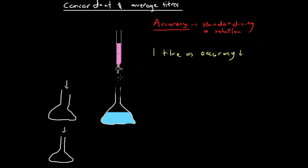Each time we do a titration, we obtain a different titer volume, or maybe the same titer volume. We keep repeating the process until we have a set number of titer measurements which are really close, really similar. That tells us we've got it pretty right, pretty accurate. So what we look for is a set number of concordant titers.